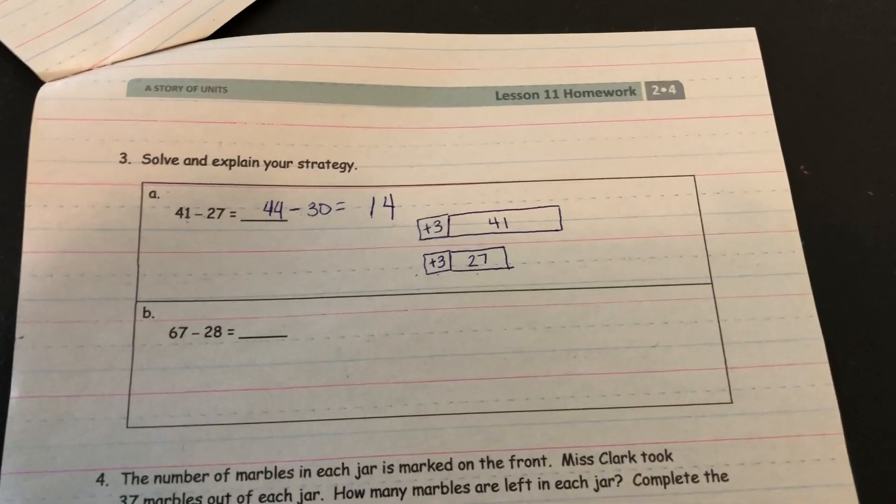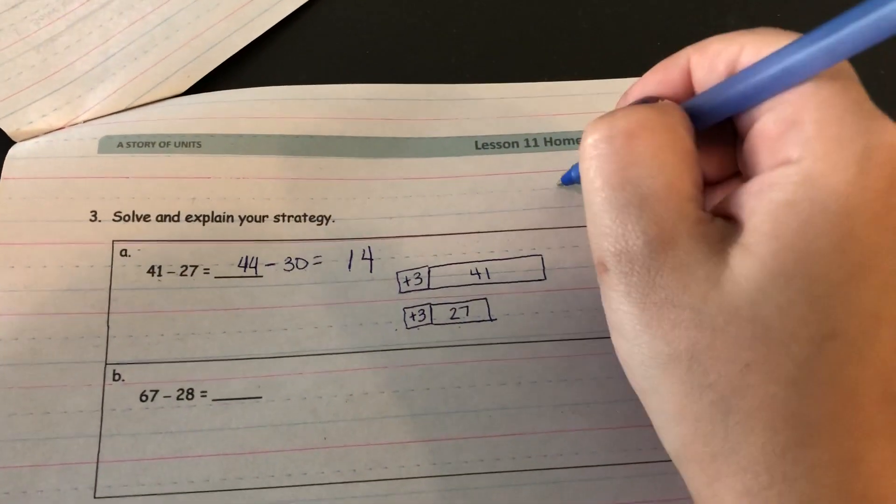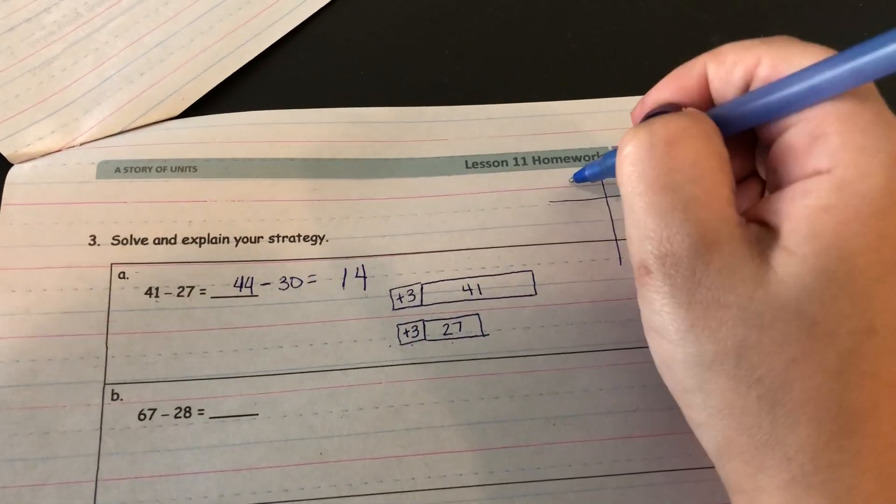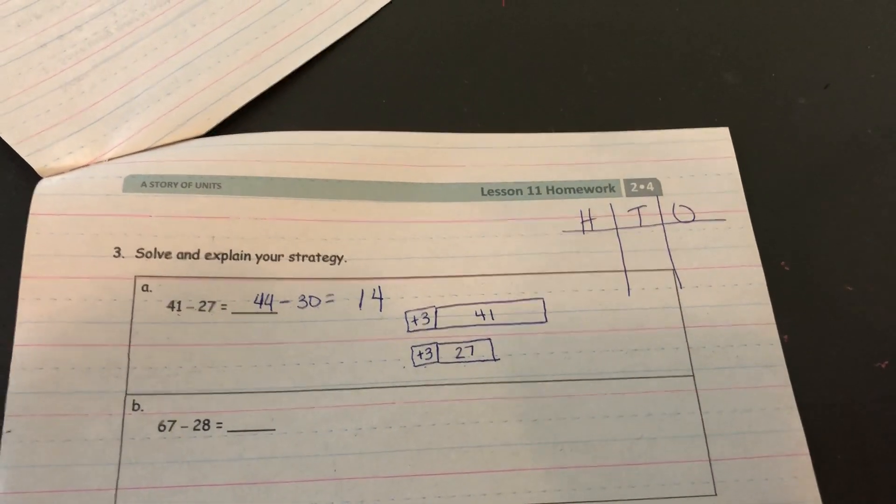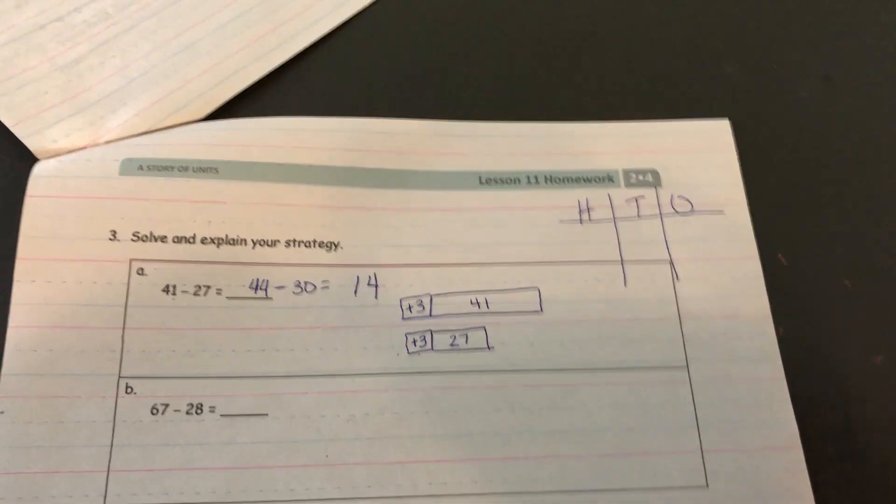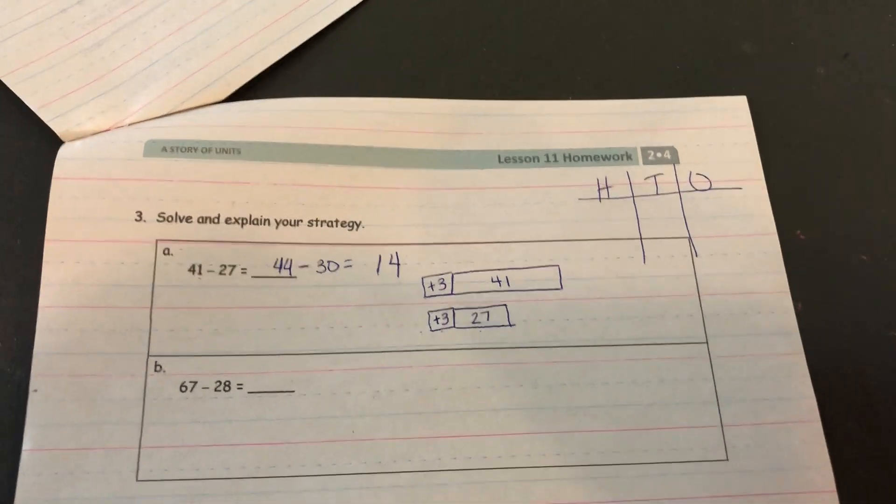But if you wanted to draw a place value chart, that is totally fine too. Either way would work. If you wanted to do a number bond that would work too. You just find a strategy that you like and use it.